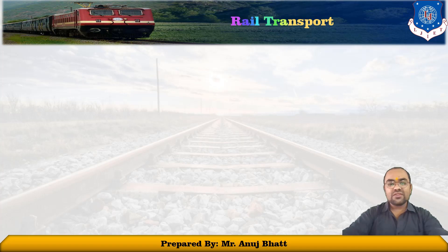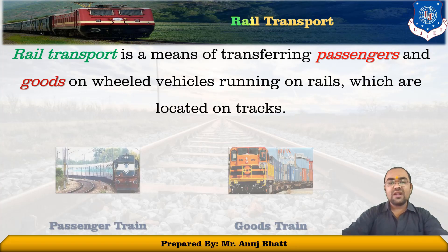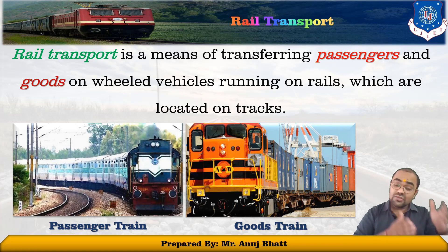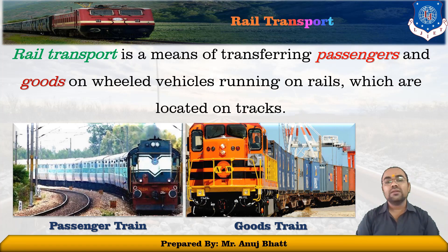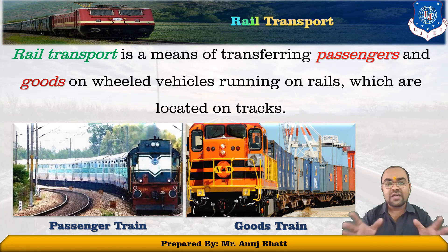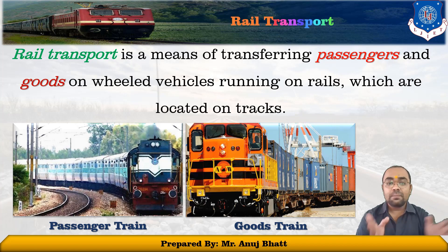What is rail transport? Rail transport is a means of transferring passengers and goods on wheeled vehicles that are running on rails, which are located on the tracks. Here in the figure, you can see these two different types of trains, which are purposefully made for passengers and goods.